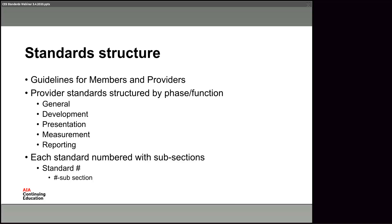There is a section on general requirements and standards, a section on developing programs, a section on presentation and how you deliver programs, a portion on how we measure how long a program is and what qualifies for credit, what qualifies as a question for a summative assessment, and finally a section on reporting — how quickly you have to get information to us, what information you have to keep, and how long you have to keep it. Each standard is numbered so we can quickly reference them, and related elements are given subsections.